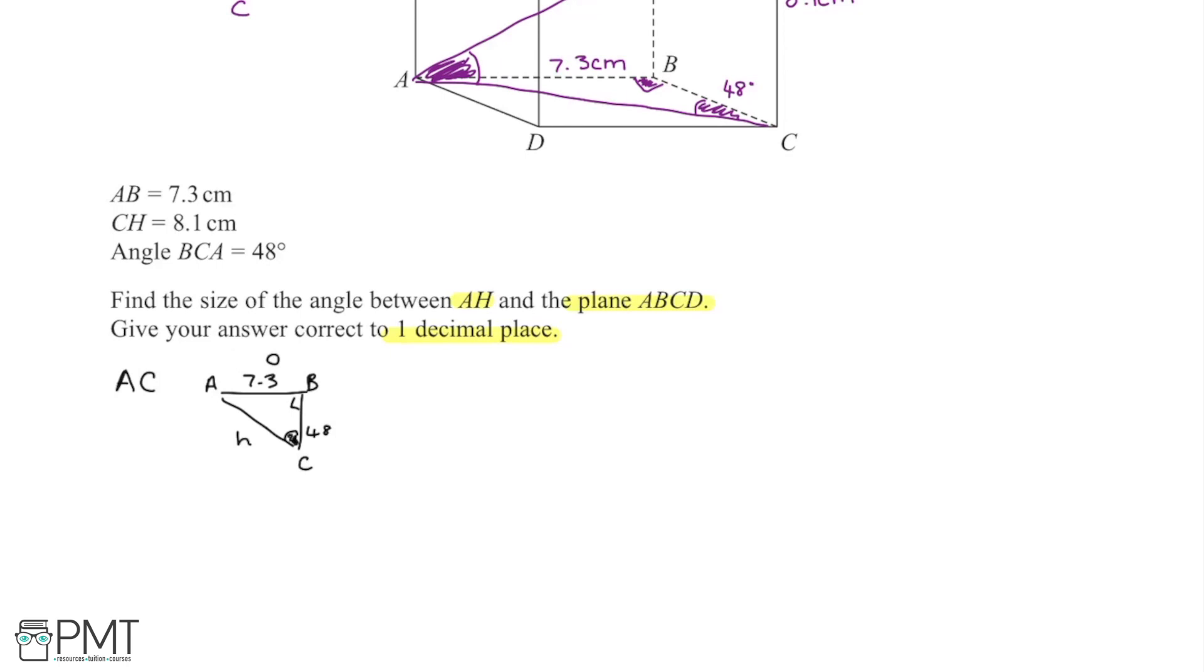So sine of the angle, so sine of 48, is equal to the opposite, which is 7.3, over the hypotenuse, which is this length AC. So AC is going to be equal to 7.3 divided by sine of 48, and that gives us an answer of 9.8231, just to 4 decimal points.